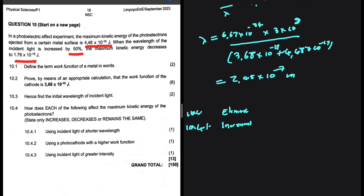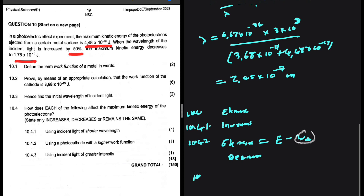For 10.4.2: using a cathode with a higher work function. If you rearrange the equation, EK max equals E minus the work function. So using a photocathode with a higher work function will decrease EK max. The answer to 10.4.2 is decreases. For 10.4.3: using incident light of greater intensity. Intensity just increases the number of photons sent to the cathode — it doesn't affect the frequency whatsoever. So the answer to 10.4.3 is remains the same.